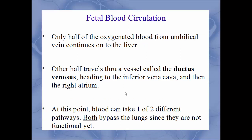As that blood enters the fetus, the first major organ it goes through is the liver. But only half will continue on to the liver — the other half will bypass the liver completely through a structure called the ductus venosus, going right around the liver directly to the inferior vena cava and then onto the right atrium like normal. So the ductus venosus is the first structure we'll talk about that is not found in newborns or adults — only in the fetus.